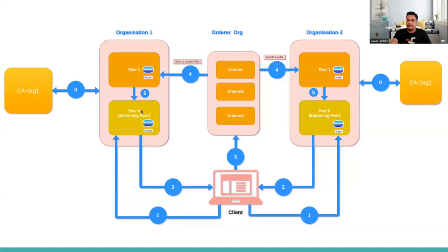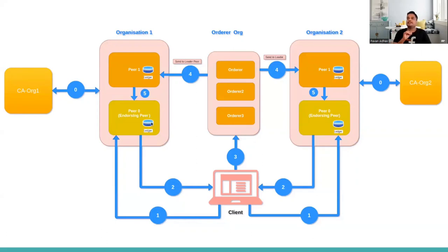After validation, the endorsing peer endorses the transaction — which is essentially just signing the proposal to create an endorsement signature. During smart contract execution at this phase, the peer creates a read set and a write set. Pavan mentions he will show how decoded blocks look, including read sets, write sets, and endorsements.